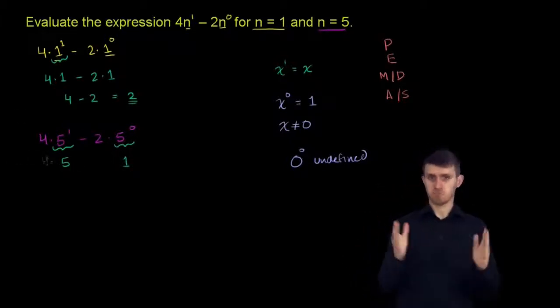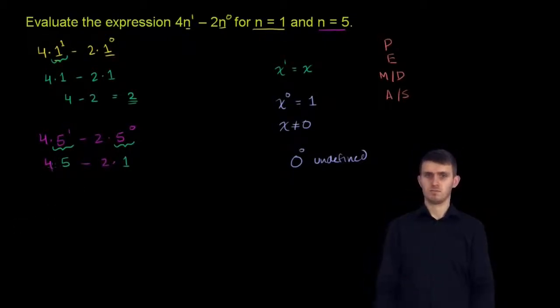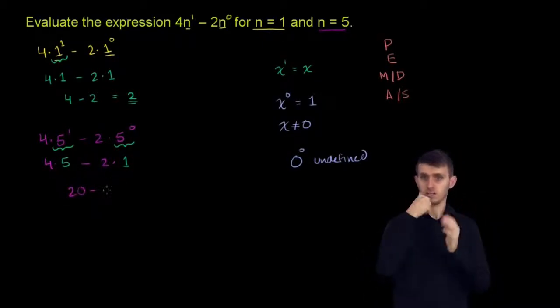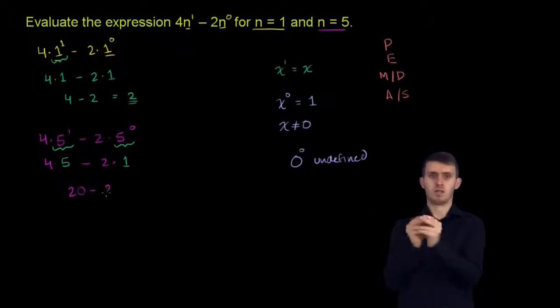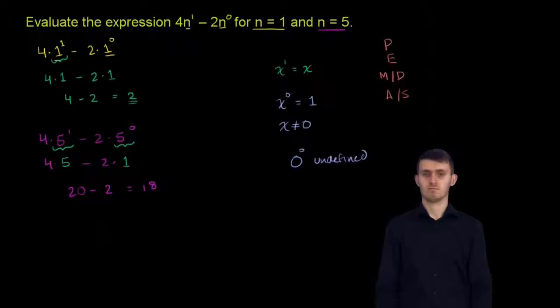And so this expression becomes 4 times 5 minus 2 times 1. Or 4 times 5 is 20, minus 2 times 1, that is 2. And this is equal to 18. And we're done.